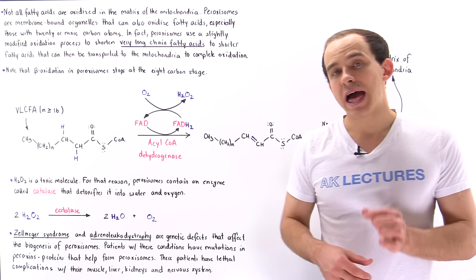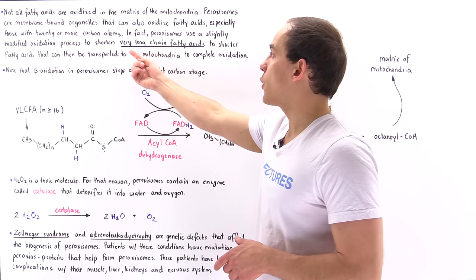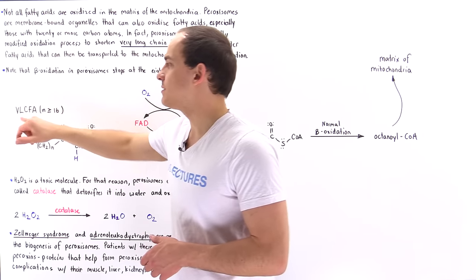Now what types of fatty acids do we generally oxidize and break down in our peroxisomes? It's the fatty acids that contain 20 or more carbon atoms. So these are known as very long chain fatty acids or simply VLCFA.